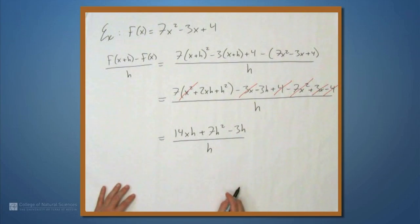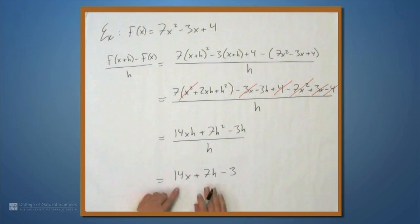Every term now in the numerator has an h, so we can cancel with the denominator. This becomes 14x plus 7h minus 3. This is what we can use to compute the derivative. We'll do that on the next sheet of paper.